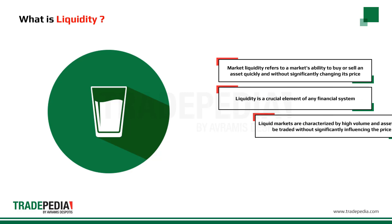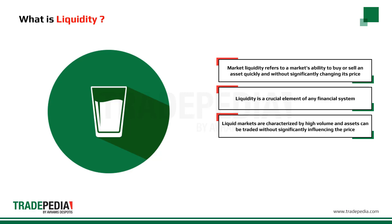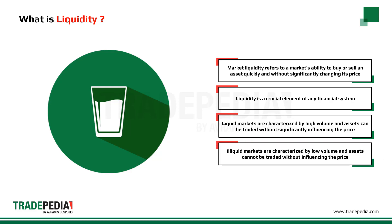Liquid markets are characterized by high volume, and assets can be traded without significantly influencing the price. Illiquid markets are characterized by low volume, and assets cannot be traded without influencing the price.